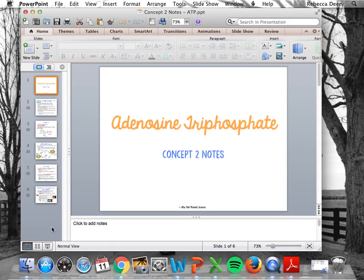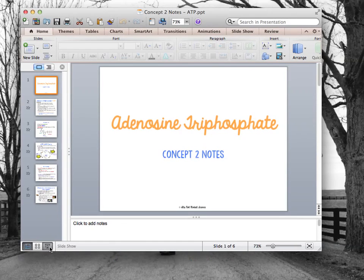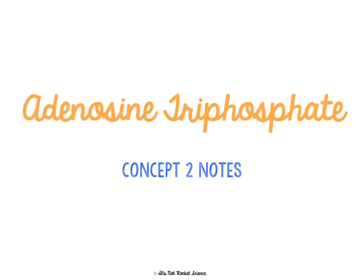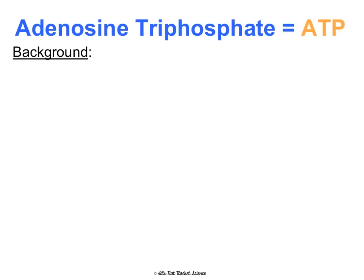Concept 2: Notes on Adenosine Triphosphate. Adenosine Triphosphate is a really long two words for ATP — that's where the A, the T, the P comes from.